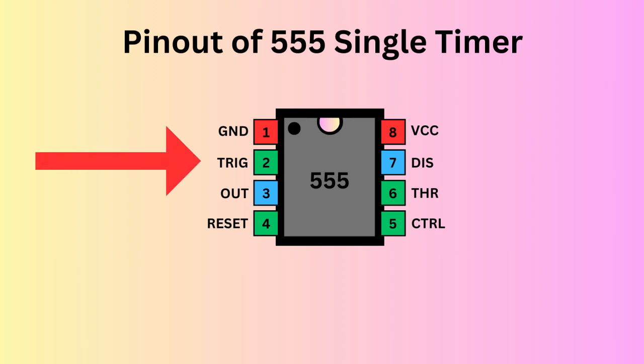Pin 2, the trigger pin, initiates the timing interval in mono-stable and stable modes. Pin 3 serves as the output, providing the timer's operational result depending on its mode.